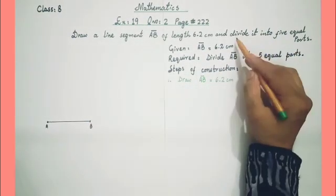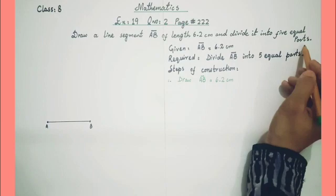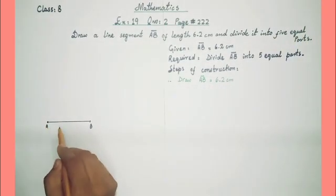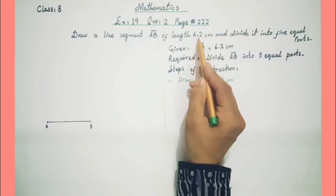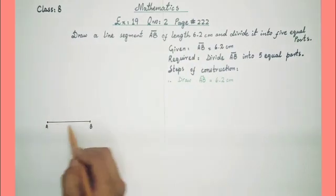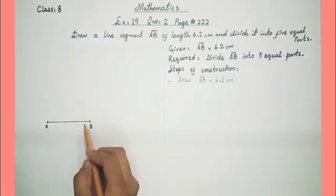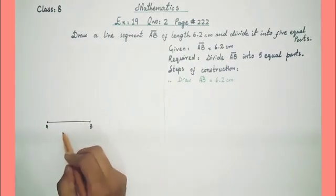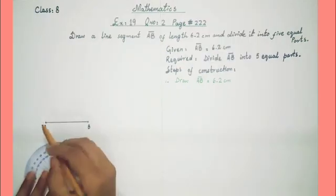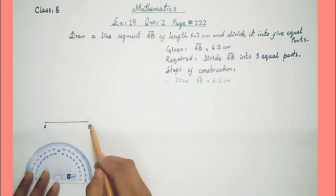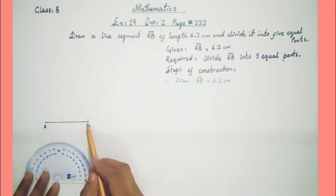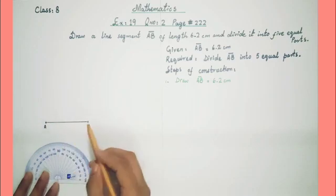But here they said divide it into 5 equal parts, so we need to divide it into equal parts. Our measurement is 6.2 cm, which is in decimal form. If we try to divide it with a ruler, we cannot divide it in decimal. So we need to apply this construction method. We will construct acute angles on points A and B.